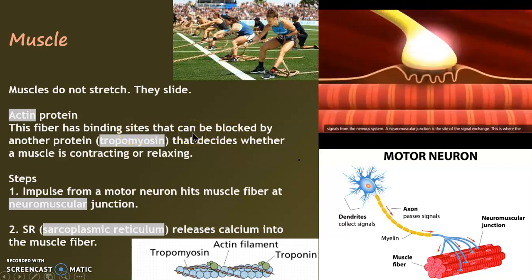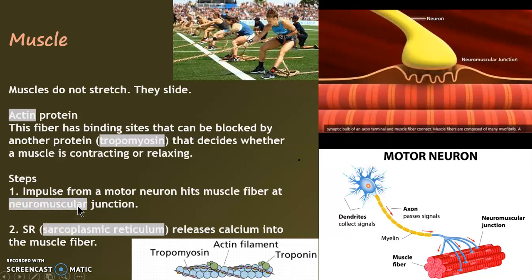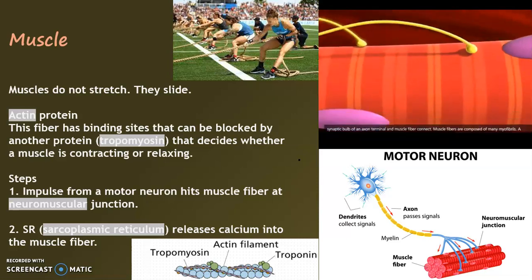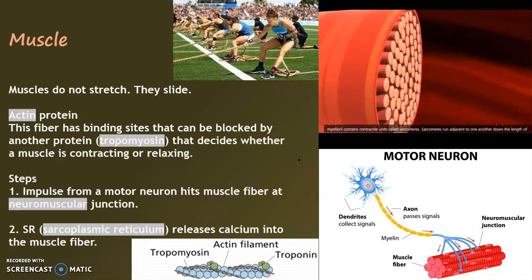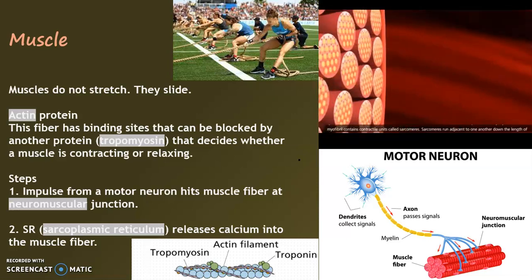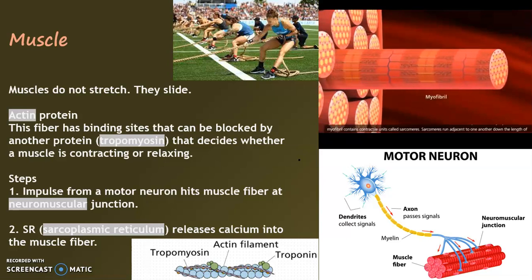The muscles are connected to the nervous system at the neuromuscular junction — that's what we're seeing in this video right now. Muscle contraction begins with a neural impulse that's going to arrive at the muscle myofibril. Here you'll see the functional unit I'll be talking about: the sarcomere.